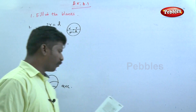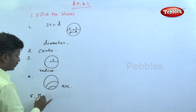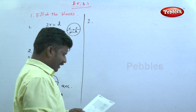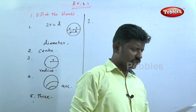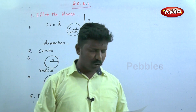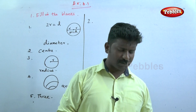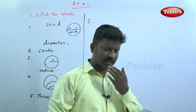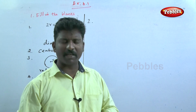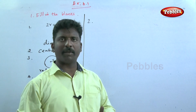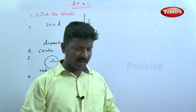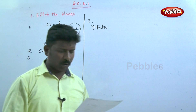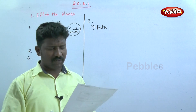Question number five: a circle divides the plane into three parts — this is a statement. Now question two is true or false — give reasons. The first one: a line segment joining any two points on the circle is called the radius of the circle. The radius goes from the center, so this statement is false.